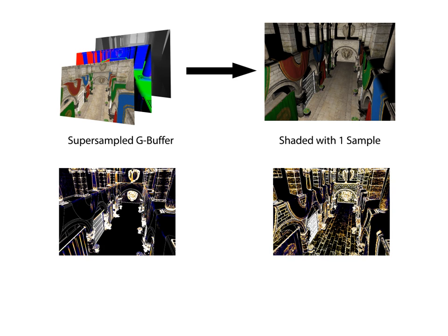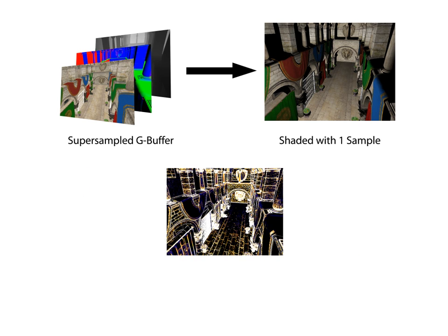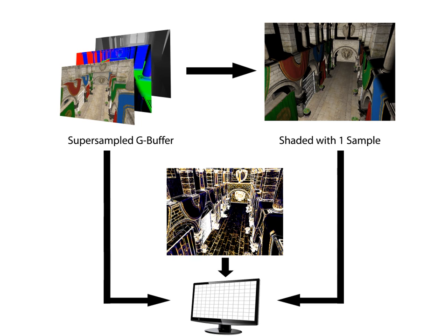As a result, we deduce a texture containing the required number of samples per pixel. Finally, we compute our image by shading each pixel adaptively, based on its required number of samples.